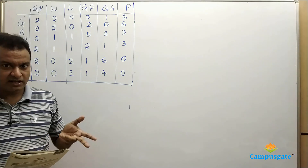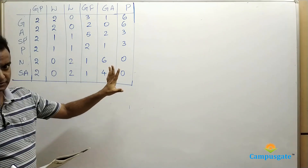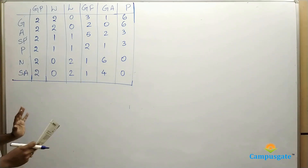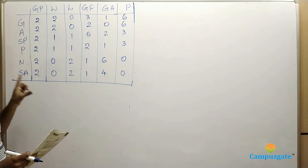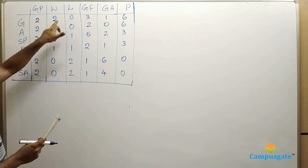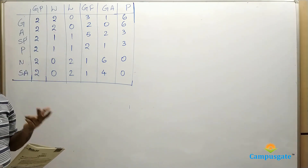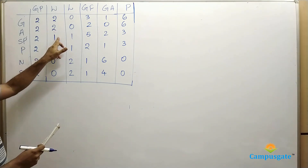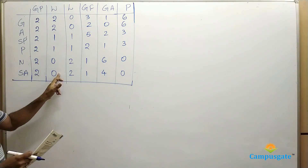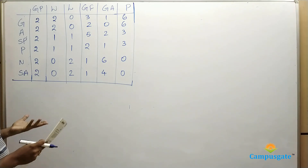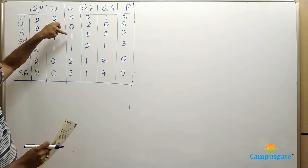This table shows the standings after each team has played two matches. In terms of wins: Germany won both its matches, Argentina also won both, Spain won only one match, Pakistan won only one match, and New Zealand and South Africa did not win any matches. There were no draws.